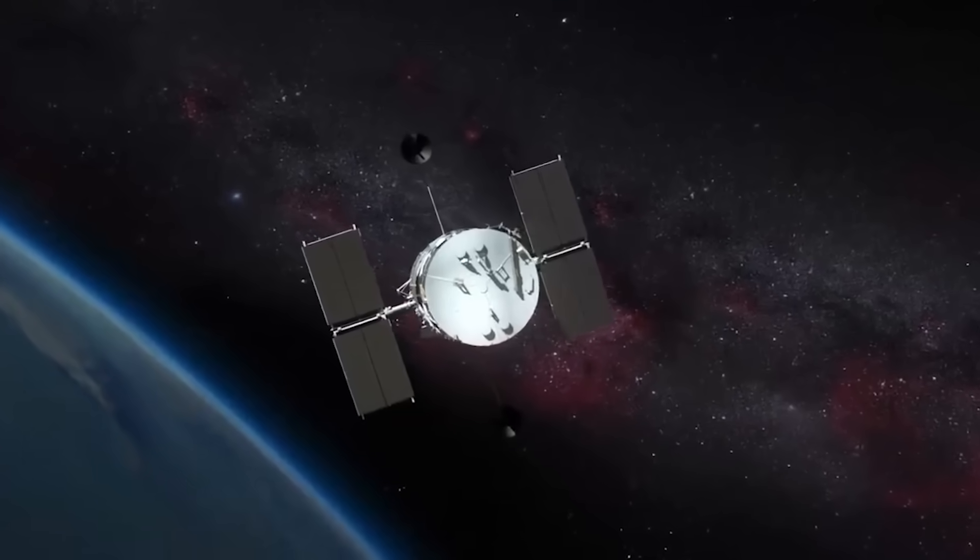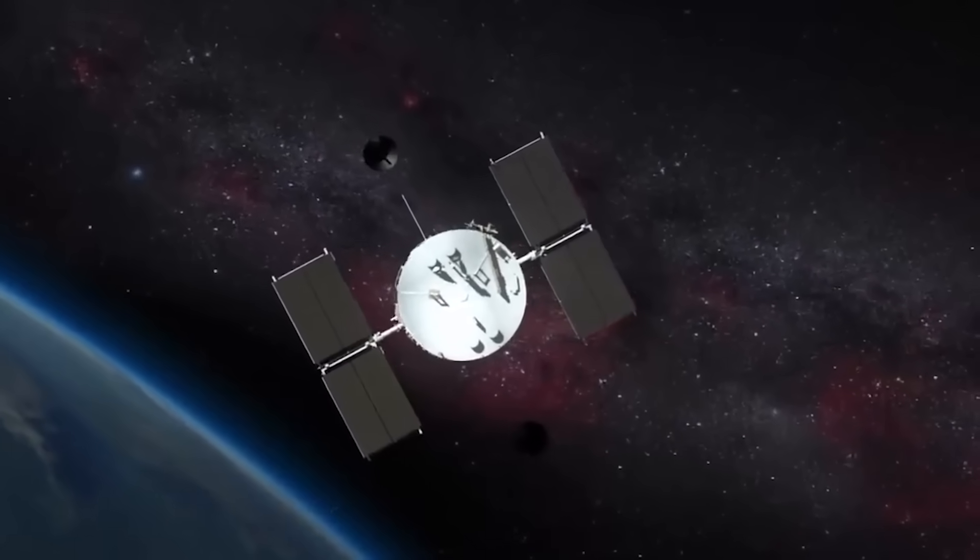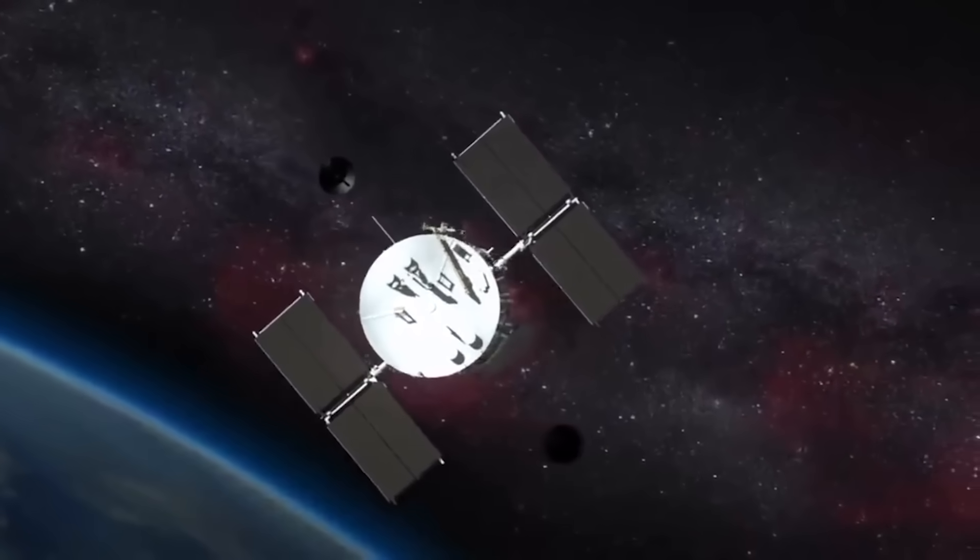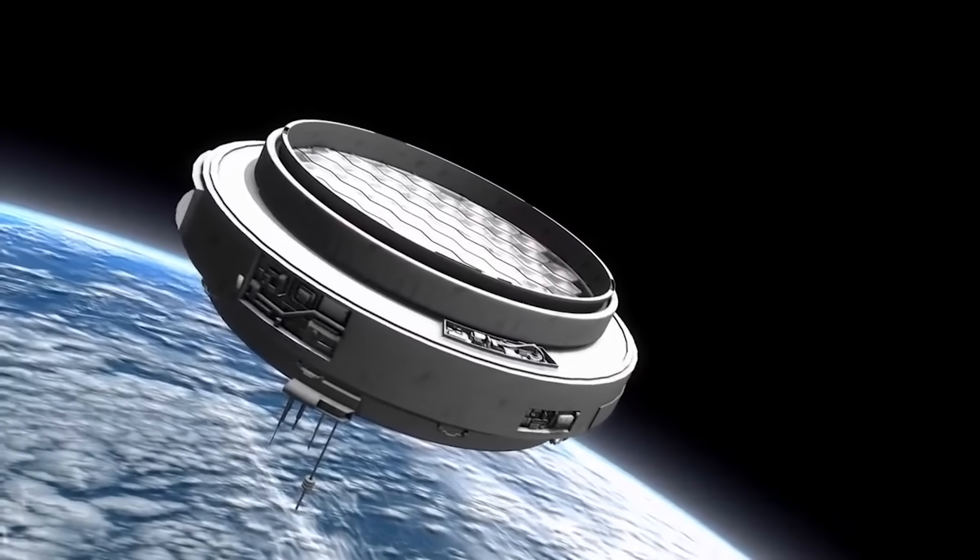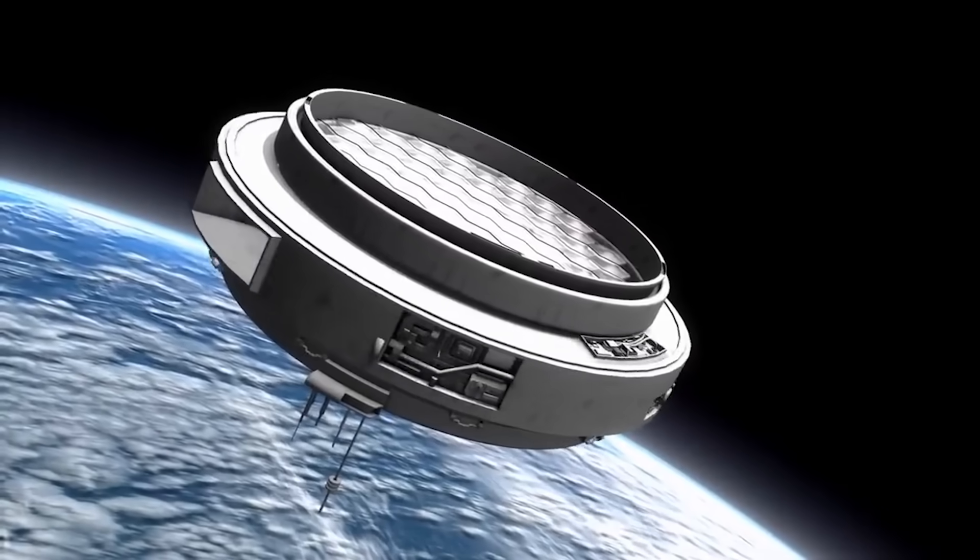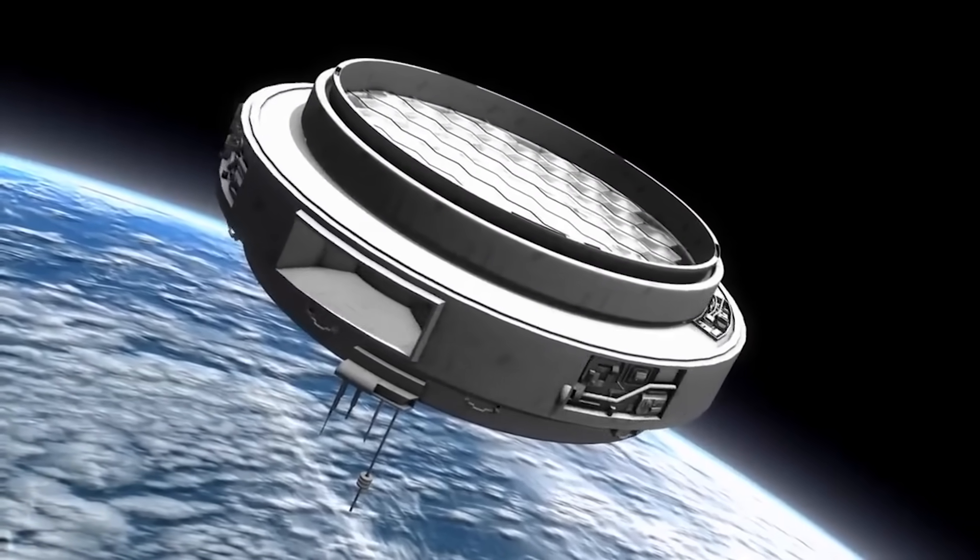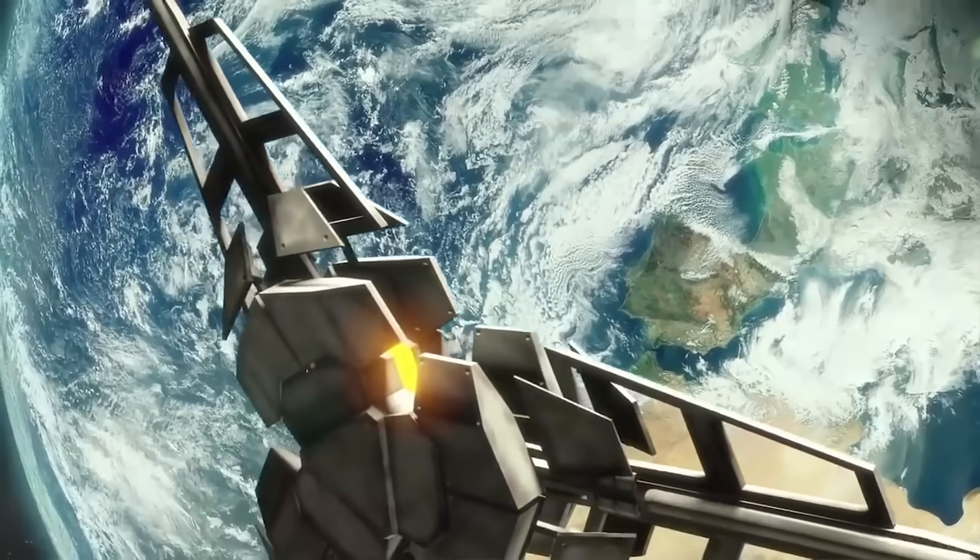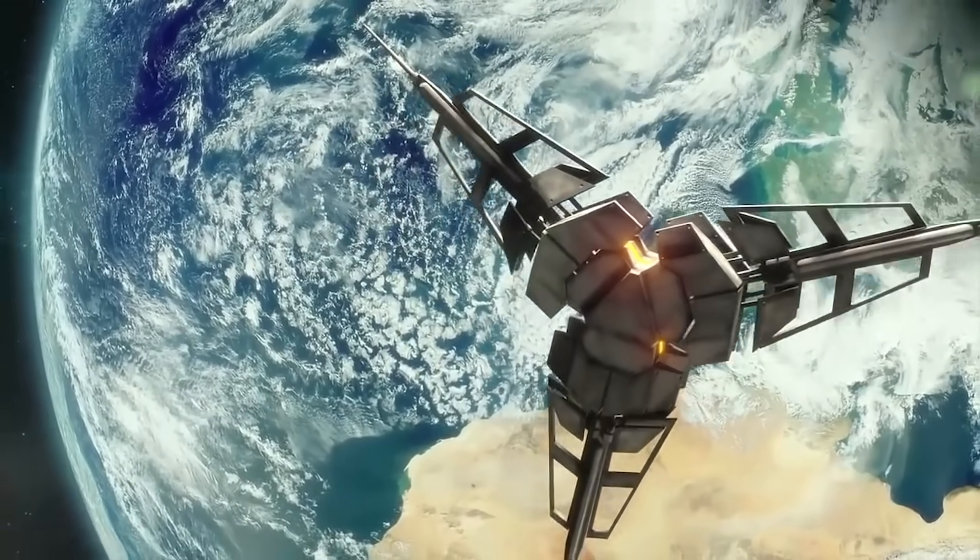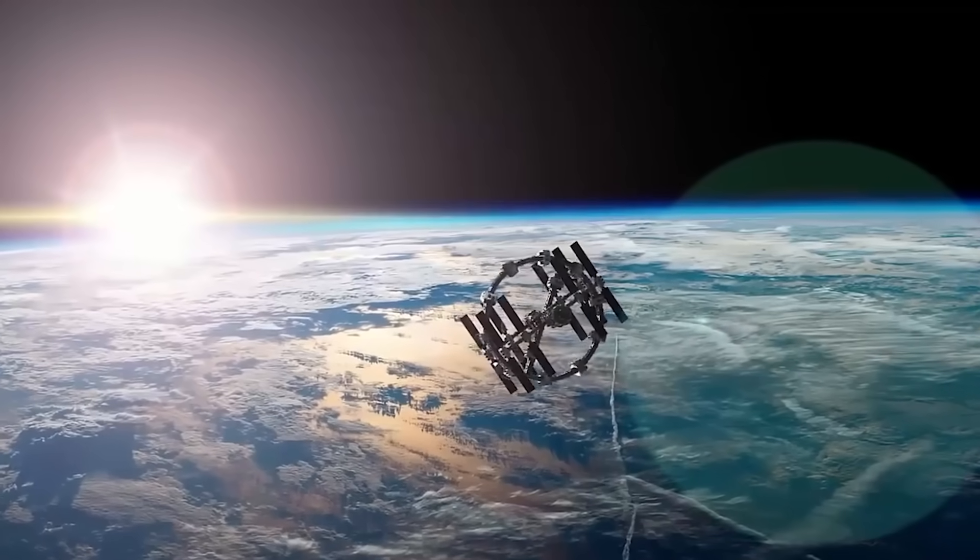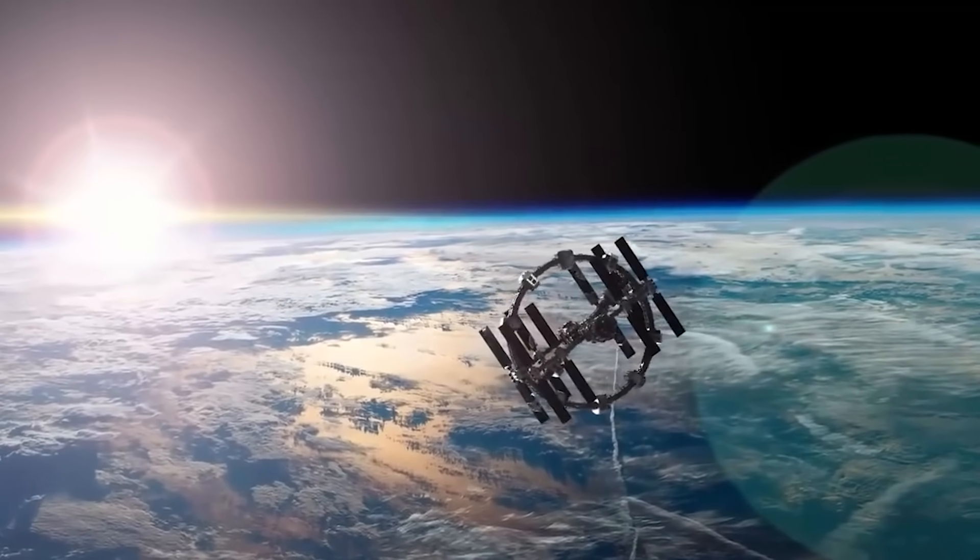Fast forward to the 21st century, and we find ourselves in the age of satellite constellations. Companies like SpaceX, OneWeb, and Amazon are deploying vast networks of small satellites to provide global internet coverage. This ambitious endeavor aims to connect even the most remote corners of the Earth, addressing the digital divide.